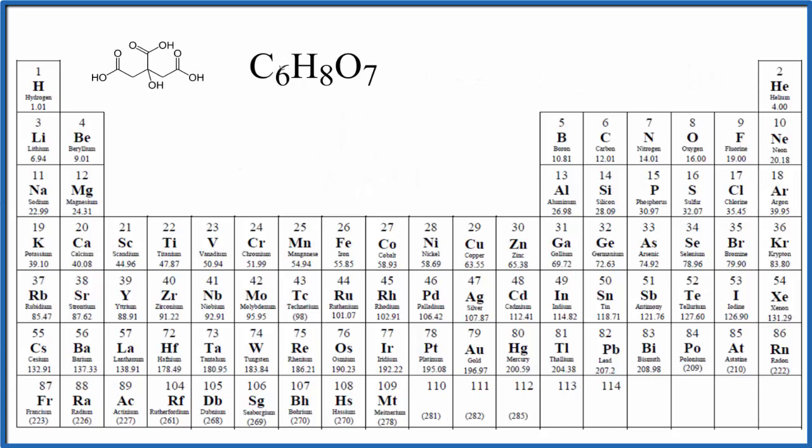So we go to the periodic table. We find carbon. That's right here. Carbon is 12.01 grams per mole. I won't write grams per mole. Let's write that at the end. We have six carbon atoms. So we multiply by six.